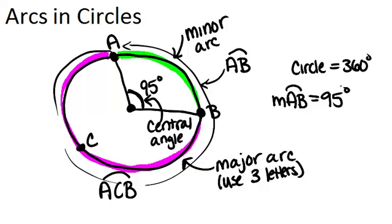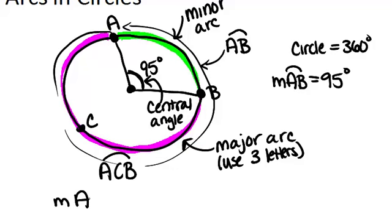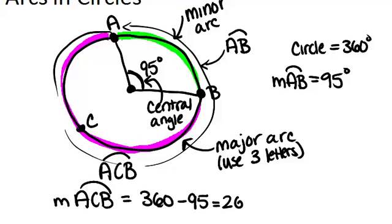Now because a full circle is 360 degrees, if you know the measure of the minor arc, you can also figure out the measure of the major arc by doing 360 degrees minus the minor arc measure. So if we wanted to figure out the measure of arc A, C, B, what we would do is 360, the full circle, minus 95, which is the minor arc, and then we will be left with the major arc. So that would be 265 degrees.